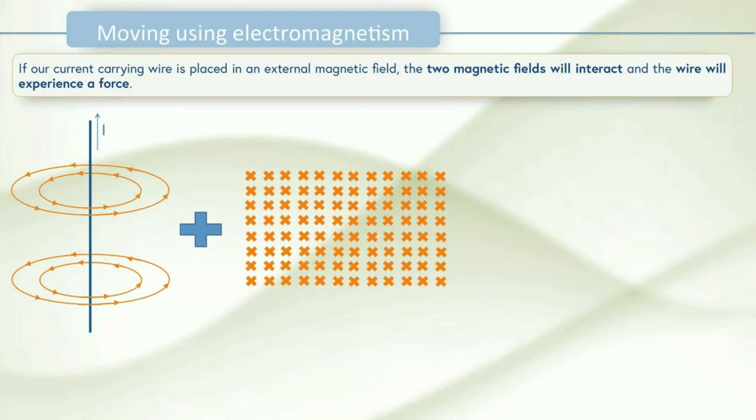So a quick word on how we represent 3D fields in two dimensions. So this magnetic field is represented by a series of crosses and this means that the field is going into the screen. If we could see into the screen and look at this sideways we'd see the arrow going along. If we saw a dot this would mean that the field was coming out of the screen towards us.